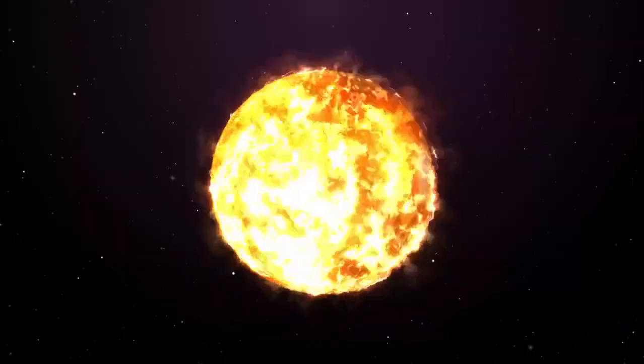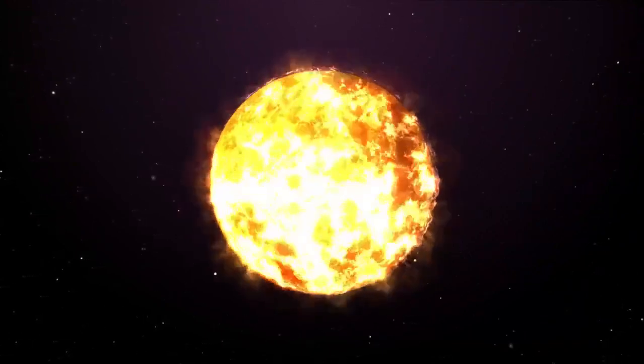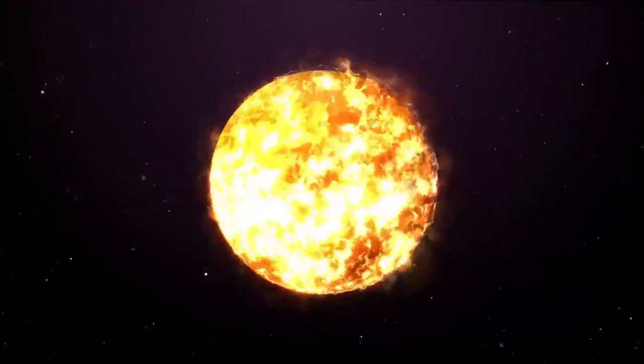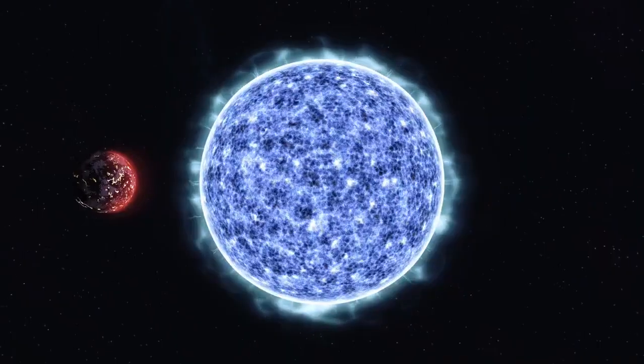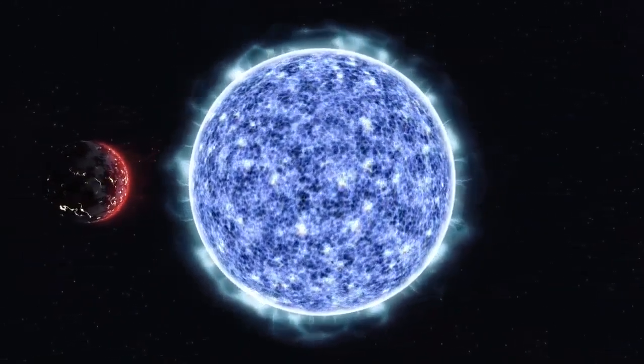During the expansion phase, the star's surface cools, reducing its brightness and giving it a dimmer appearance when observed from Earth. In contrast, during the contraction phase, the surface heats up, increasing the star's brightness and making it appear more luminous.